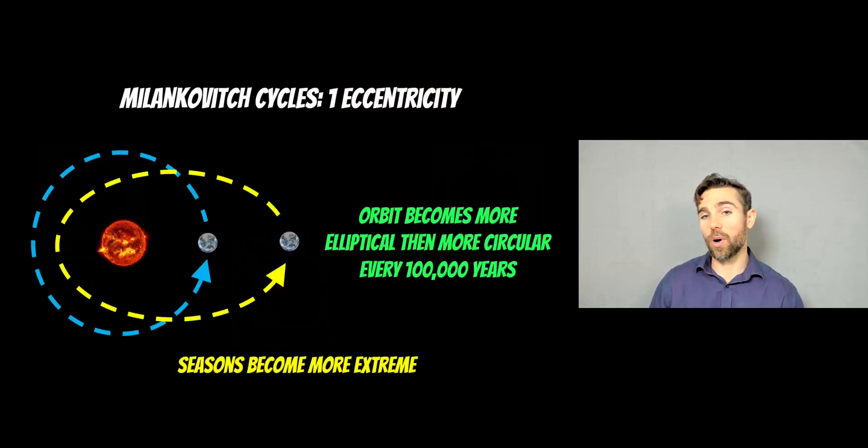So the first one relates to eccentricity or how elliptical the orbit of Earth is. So every 100,000 years, Earth's orbit becomes more elliptical and then it goes more circular. And this cycles about every 100,000 years. What that actually does is it makes your seasons a little bit more extreme and then less extreme, because when you become more elliptical as the orbit, then you get closer to the sun and further away during one orbital period as it goes around once. So your seasons are going to be a little bit more extreme.